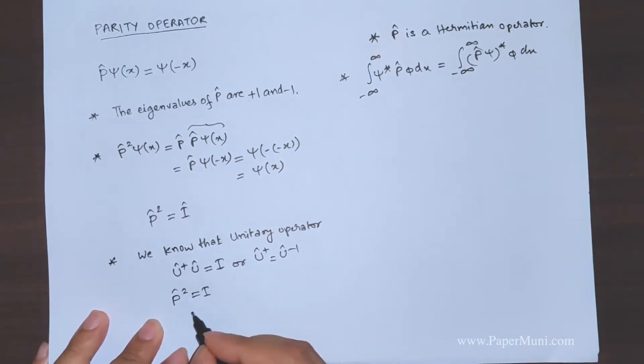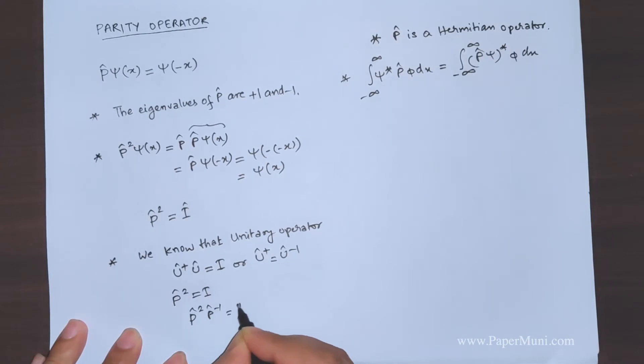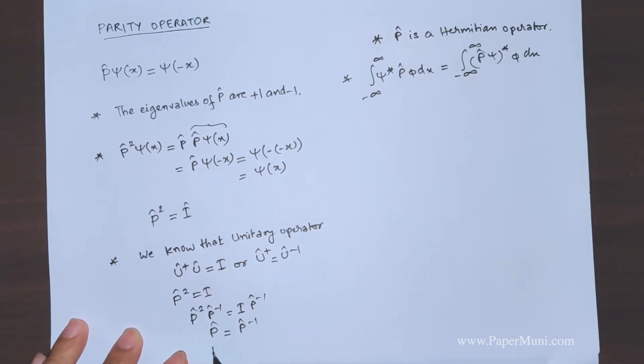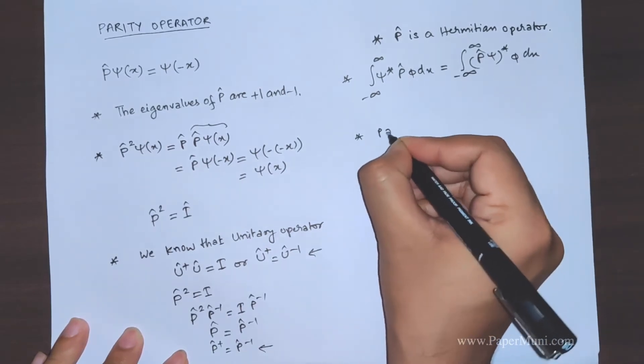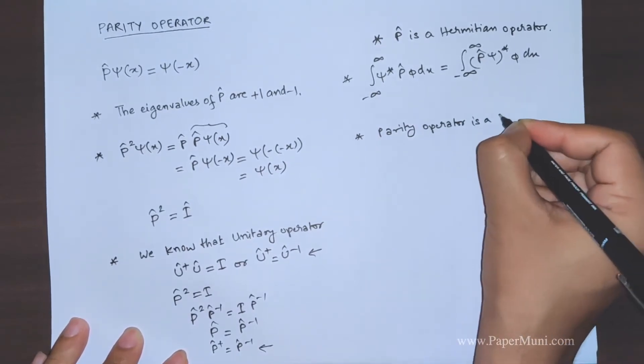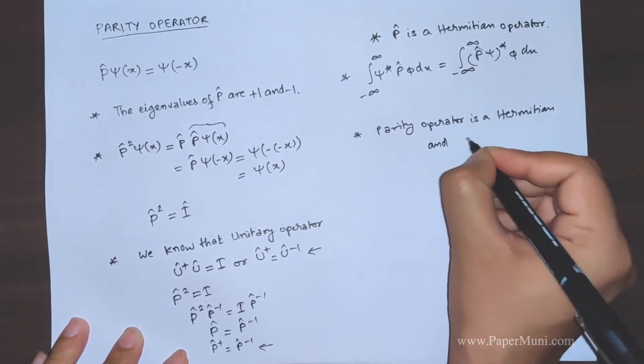Now from this case, we can multiply by P inverse. So what we get is P equal to P inverse. Since P is a hermitian operator, we can write P dagger equals P inverse. So this is the same property as the unitary operator property. Therefore, a parity operator is hermitian and as well as unitary operator.